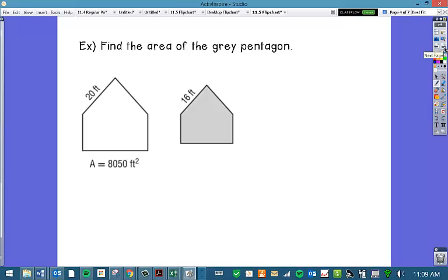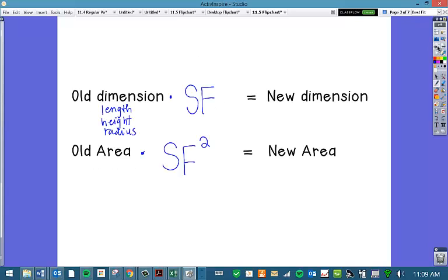Let's take a look at this example. I have this original white pentagon and I am going to figure out what the area of this new gray pentagon is. The first thing I need to do is figure out what my scale factor is. I know the old side and the new side. So I'm going to have that same formula, old dimension times scale factor equals new dimension.